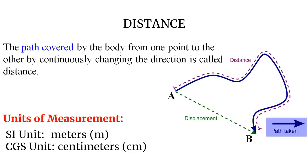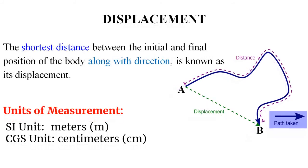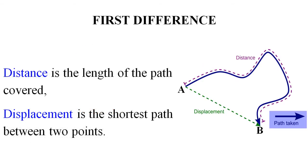We define distance as the path covered by the body from one point to another by continuously changing direction. In the SI system we measure it in meters, and in the CGS system in centimeters. Displacement is defined as the shortest distance between the initial and final positions of the body, along with direction — meaning displacement has a specific direction. The units of measurement for displacement are the same as for distance.